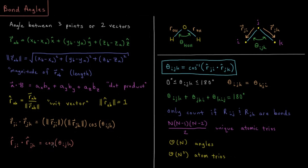In order to get the angle, we take the inverse — the arc cosine — to isolate theta. So our bond angle theta_ijk between atoms i, j, and k is equal to the arc cosine of r-hat_ji dot r-hat_jk, the dot product of unit vectors ji and jk.